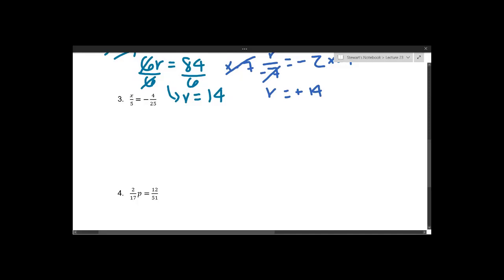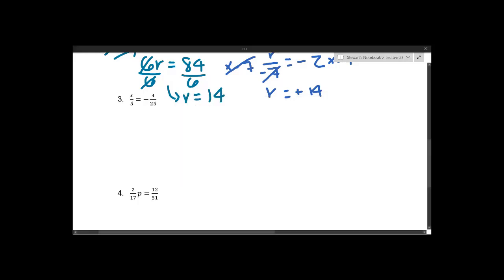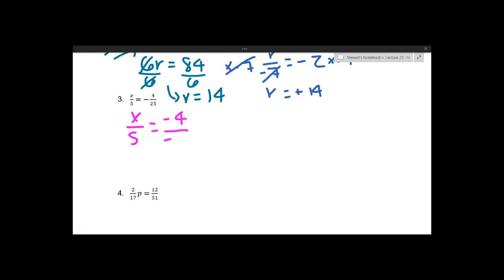Now we're dealing with two fractions, but it's the same exact thing. We have x over 5 equals negative 4 over 25. The only thing being done to x is that it's being divided by 5, so to get rid of that we multiply by 5 on both sides. I'll start using parentheses to denote multiplication since we already have an x, to avoid confusion.